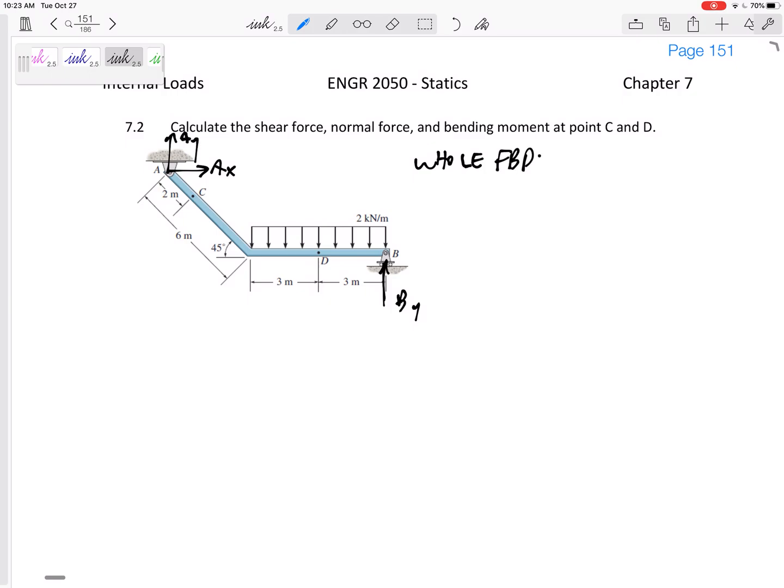So for the whole free body diagram, did you get, or could you get, that BY is 8.48 kilonewtons, AX is zero, and AY, 3.52 kilonewtons.